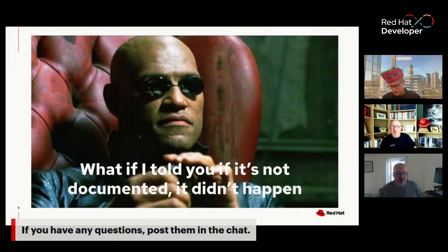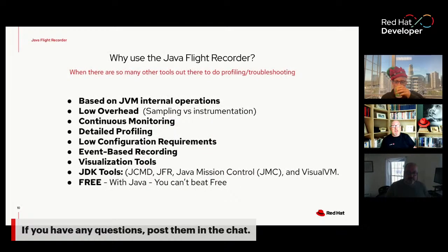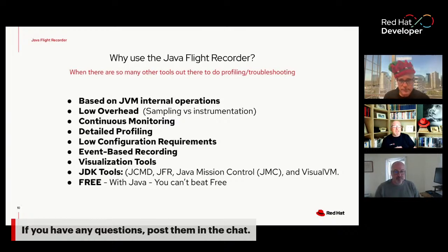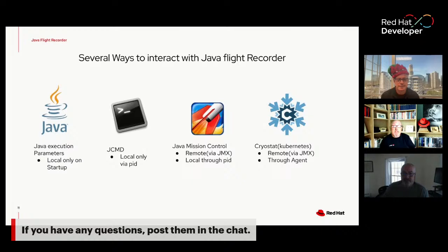JFR is event-driven, which is how it can be lean and mean. It samples events coming out of the JDK, your custom events if you want them, and JDK events. Why use Java Flight Recorder? It's based on JVM internals, low overhead, continuous monitoring, detailed profiling, low configuration, event-based, with a lot of visualization and JDK tools. Best of all, it's free. It comes out of the box with JDK 11 and on. JDK 8 works but requires a few more switches.